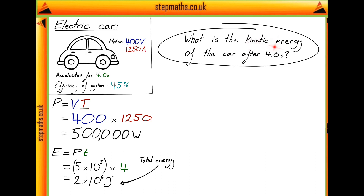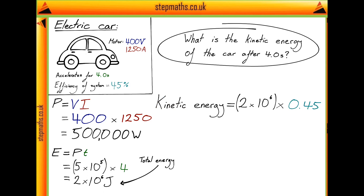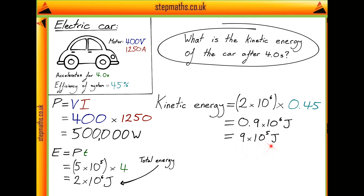However, the question is asking us for the kinetic energy of the car after four seconds, not the total energy. The difference is that the motor has an efficiency of 45%, which means that 45% of all the energy produced by the motor is converted into kinetic energy. So to find the total kinetic energy, we take our total energy of 2 times 10 to the 6 joules and multiply it by our efficiency factor of 0.45. This gives us 0.9 times 10 to the 6 joules, which in standard form is 9 times 10 to the 5 joules. This corresponds to answer C.